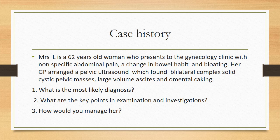I will start my lecture with a case history. Mrs. L is a 62-year-old woman who presents to the gynecology clinic with non-specific abdominal pain, a change in bowel habit and bloating. Her GP arranged a pelvic ultrasound which found bilateral complex solid cystic pelvic masses, large volume ascites and omental caking. What is the most likely diagnosis, what are the key points in examination, how would you investigate this patient, and how would you manage this lady? At the end of the presentation you will be able to answer all these questions — this is an assignment for you.